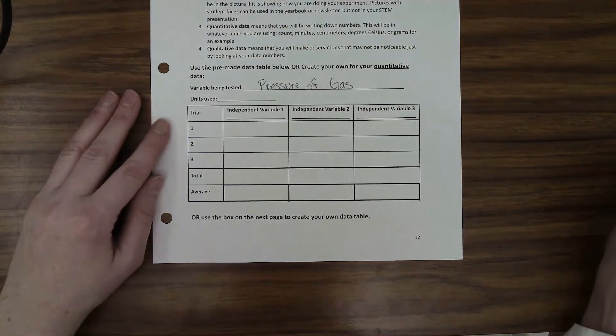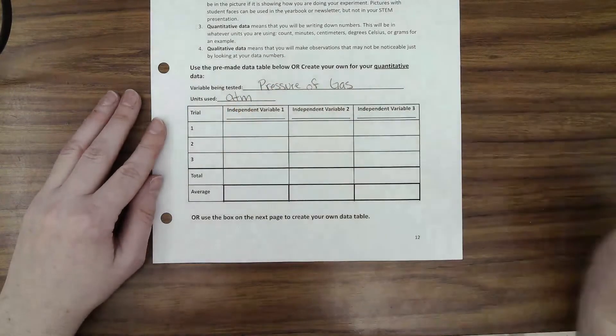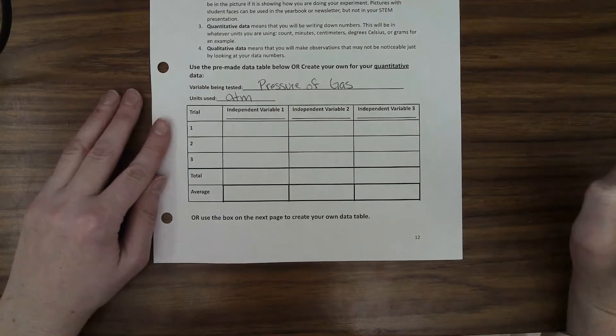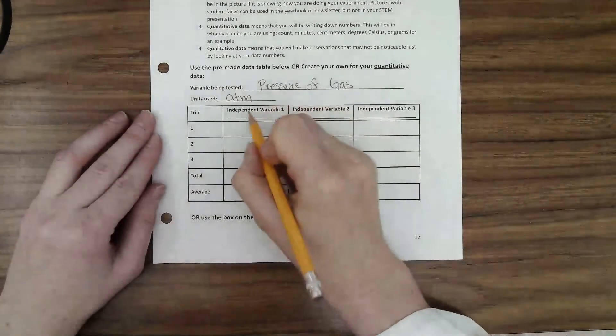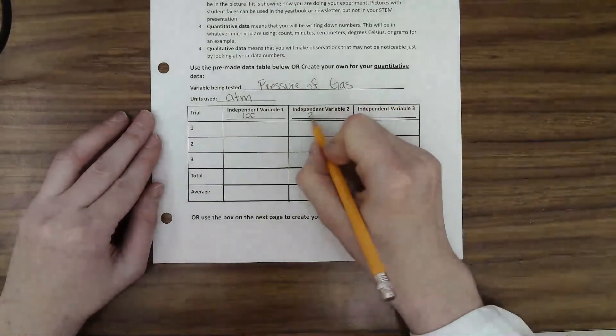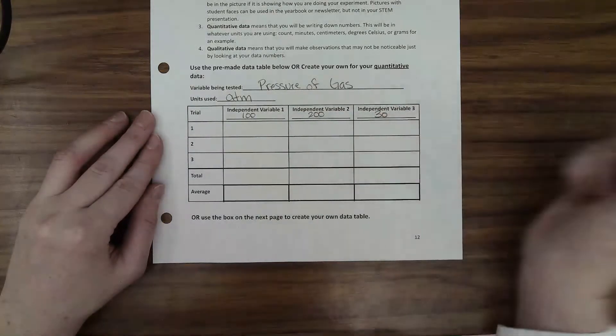The units of the pressure that we're using in this lab are atmospheres, and that is abbreviated atm. Now I'm going to be testing the number of particles, so I'm going to be trying it with 100 particles, 200 particles, and then I'm going to try 300 particles.